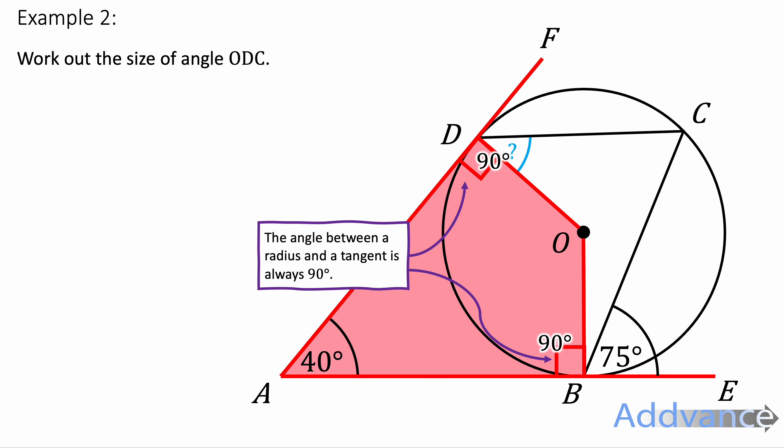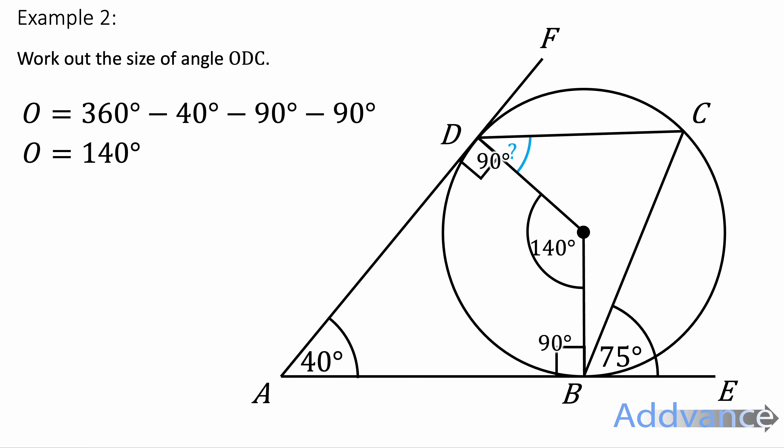Now, I've got a quadrilateral with three of the four angles labelled. To find the fourth angle, I just do 360 minus 40 minus 90 minus 90, which is 140 degrees. And I know the angle at the centre is 140 degrees.